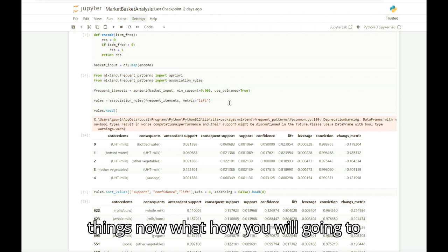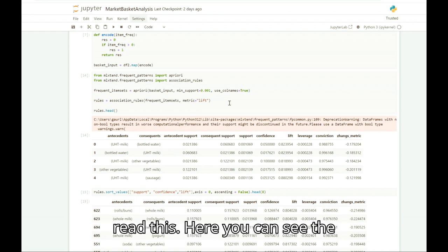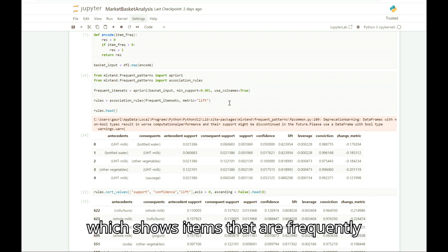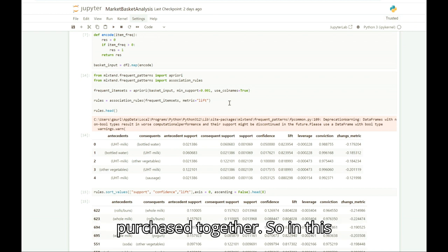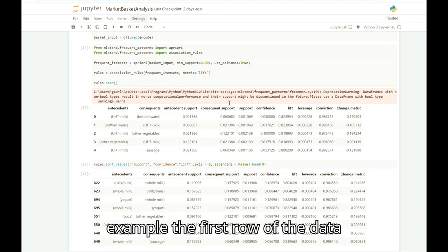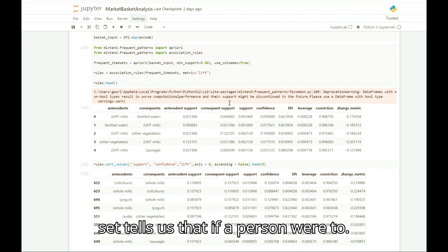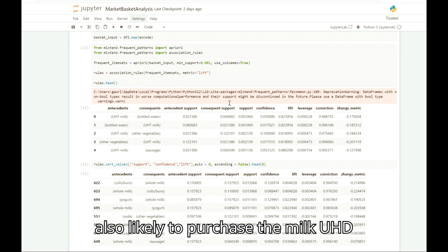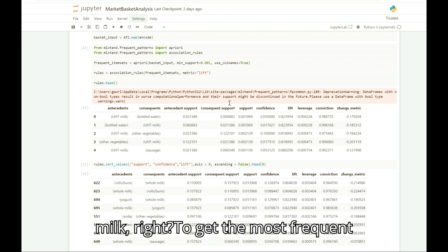Once you have done all these things, how will you read this? Here you can see the antecedents and the consequent columns, which show items that are frequently purchased together. In this example, the first row of the dataset tells us that if a person were to buy bottled water, then they are also likely to purchase milk, UHT milk.